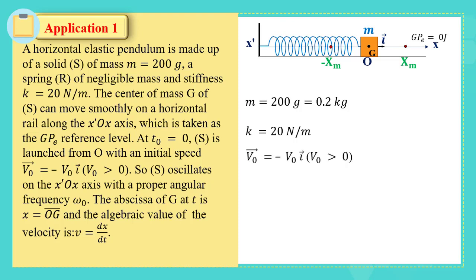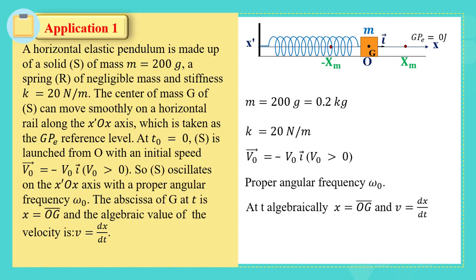At t₀ equals 0, S is launched from O with an initial speed v₀ vector equals minus v₀ î, where v₀ is positive. So S oscillates on the x-axis with proper angular frequency ω₀. The abscissa of S at time t is x, and the algebraic value of velocity v is dx/dt.